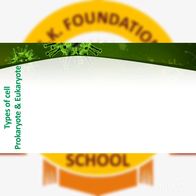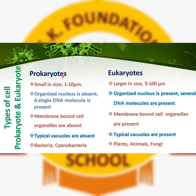Now we have to learn the second classification of cells: prokaryotic and eukaryotic cells. Prokaryote means a not-fully-developed cell, and eukaryote means a well-developed cell. Prokaryotes are small in size; eukaryotes are large in size. Prokaryotes do not have a nucleus — nucleus is absent — and that's why only a single DNA molecule is present.